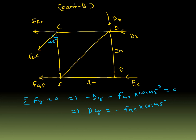So Dy and Ex are now obtained. From here you can also calculate FGC. Then Ex and member FE are colinear, so FD becomes zero. From this, the compressive force FEF is also obtained. Now Ex and FEF are both compressive.